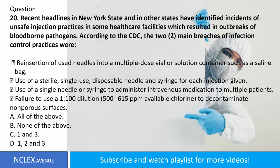Question number twenty. Recent headlines in New York State and other states have identified incidents of unsafe injection practices in some healthcare facilities, which resulted in outbreaks of blood-borne pathogens. According to the CDC, the two main breaches of infection control practices were: 1. Reinsertion of used needles into a multiple-dose vial or solution container such as a saline bag. 2. Use of a sterile, single-use, disposable needle and syringe for each injection given. 3. Use of a single needle or syringe to administer intravenous medication to multiple patients. Answer choices: A. All of the above. B. None of the above. C. 1 and 3. D. 1, 2 and 3. Answer: letter C, 1 and 3.